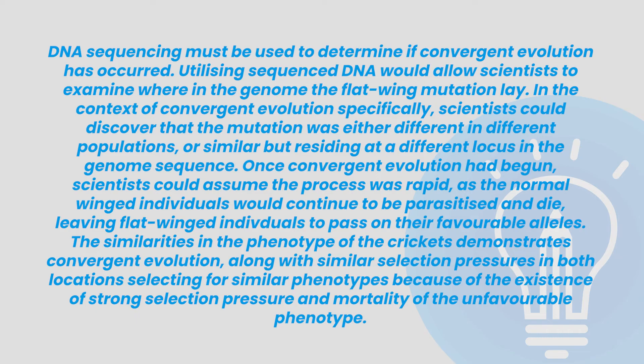All that's left is the discuss section, in which we need to talk about what scientists need to confirm convergent evolution has occurred, rather than cricket migration. DNA sequencing must be used to determine if convergent evolution has occurred. Utilising sequenced DNA would allow scientists to examine where in the genome the flat-winged mutation lay. In the context of convergent evolution specifically, scientists could discover that the mutation was either different in different populations, or similar but residing at a different locus in the genome sequence. Once convergent evolution had begun, scientists could assume that the process was rapid, as the normal-winged individuals would continue to be parasited and die, leaving the flat-winged individuals to pass on their favourable alleles. The similarities in the phenotype of the crickets demonstrates convergent evolution, along with similar selection pressures in both locations selecting for similar phenotypes, because of the existence of strong selection pressure and mortality of the unfavourable phenotype.